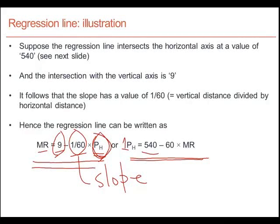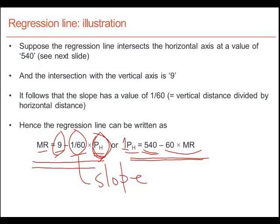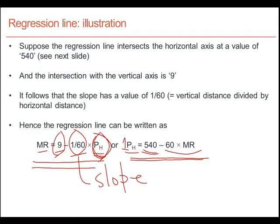To check that the equation is correct, we can ask: what value of the mortgage rate yields a house price index of 540? To obtain a house price index of 540, the last term would have to be zero, so the mortgage rate would have to take a zero value in this imaginary extreme case. What we have done is taken data from a table, drawn a scatter plot, fitted a regression line, projected it to the two axes to find the intercepts and slope, and then written down a simple linear equation relating the mortgage rate to the price of housing.